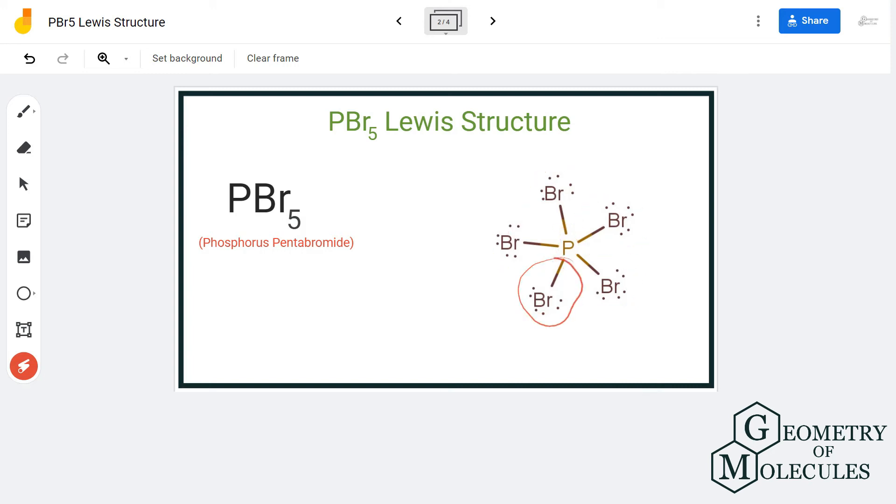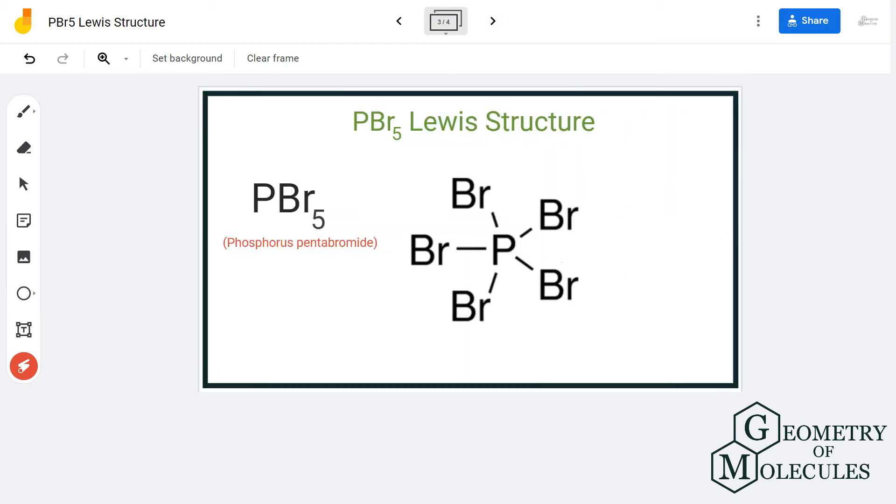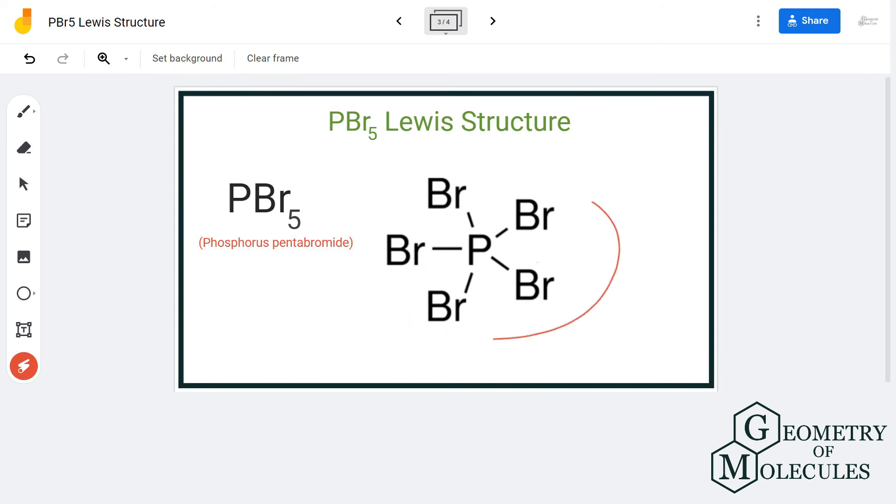Phosphorus is sharing all its valence electrons, so it also has a complete octet. So this is the Lewis structure for phosphorus pentabromide. You can also confirm it by checking the formal charges.